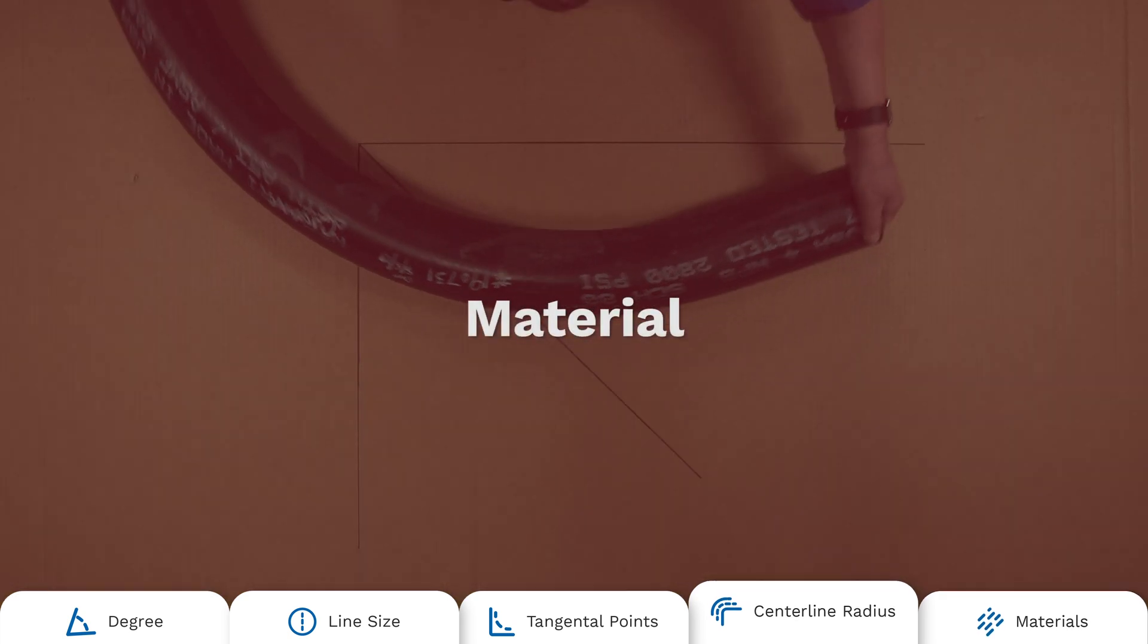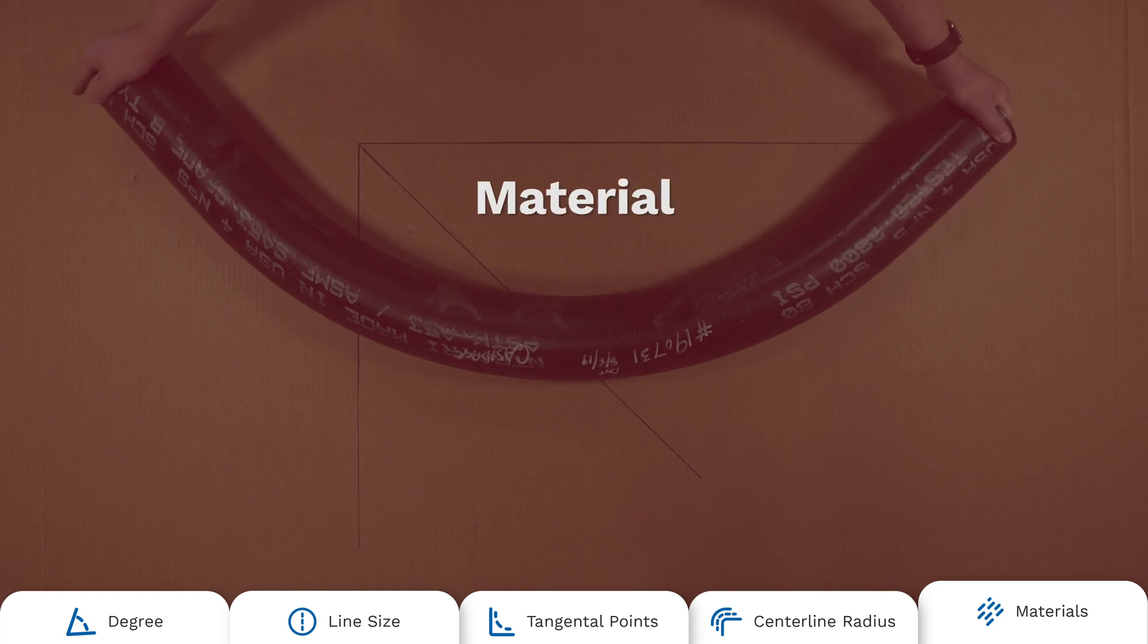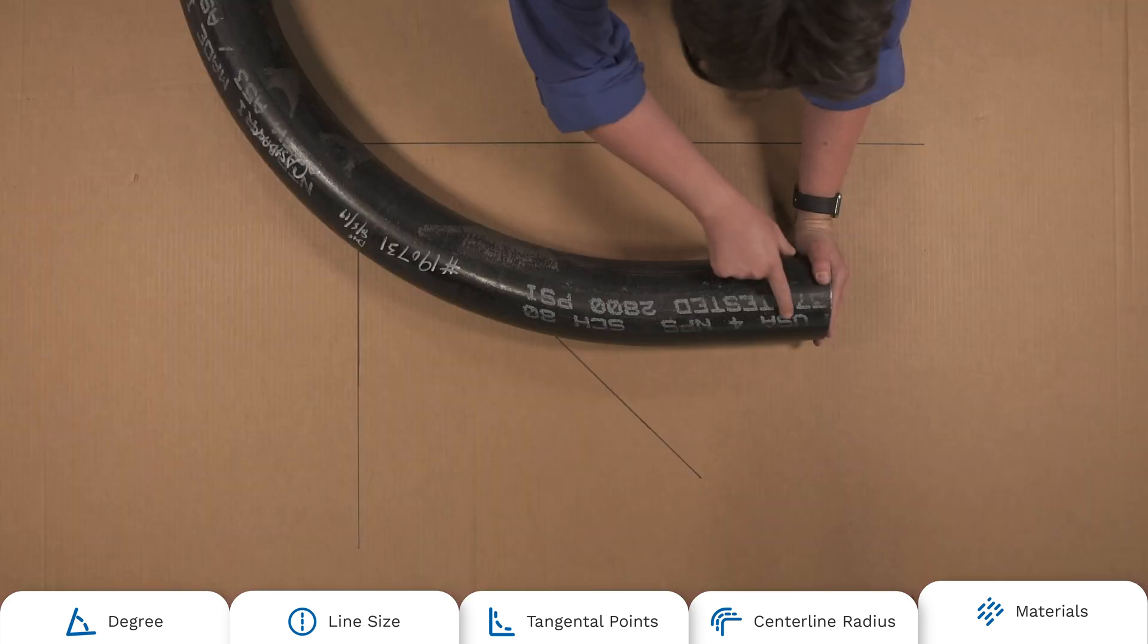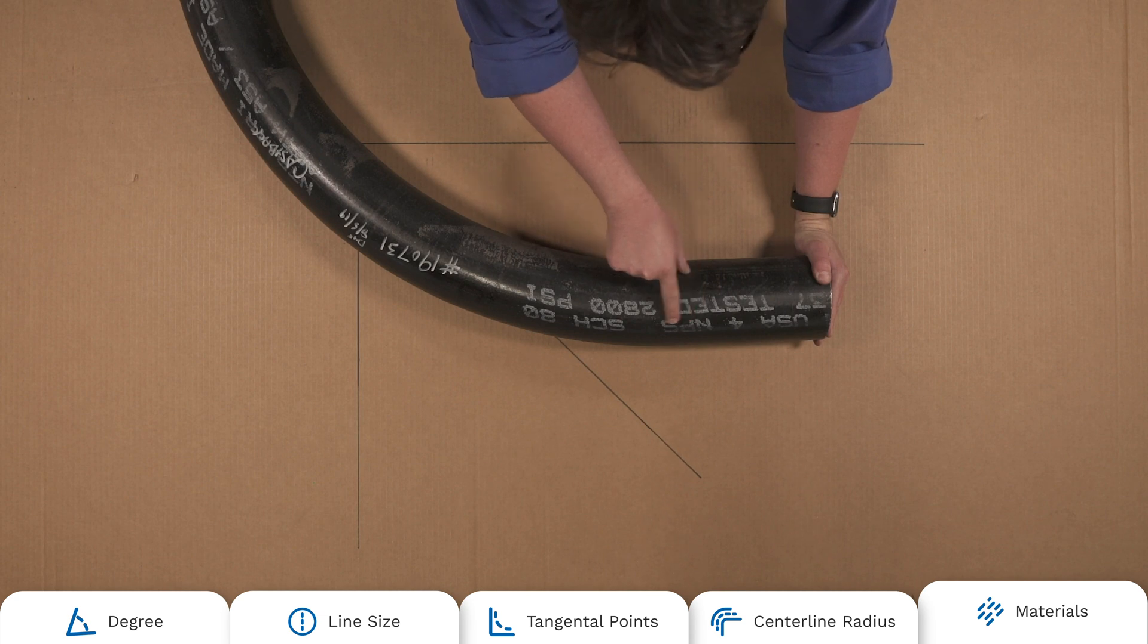Finally, you need to determine what your elbow is made of. Ways to do this include a magnet test, finding its weight or looking at its tint and oxidation versus rust. Most simply, you can look for markings on your elbow which will often tell you what it's made from.